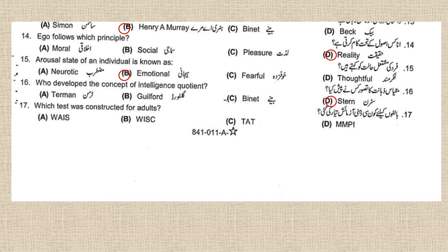This concept was utilized by Lewis Terman in the intelligence test known as the Stanford-Binet Intelligence Scale. Number seventeen: which test was constructed for adults? The WAIS test was constructed for adults — it stands for Wechsler Adult Intelligence Scale.